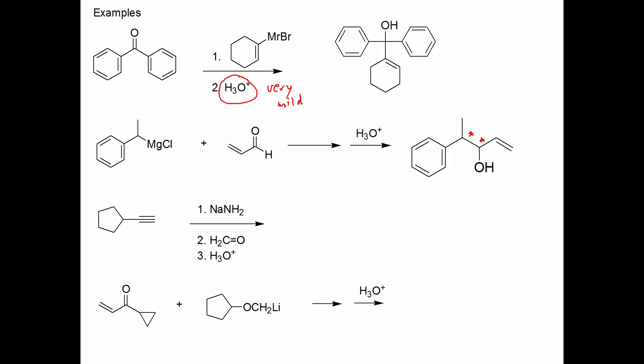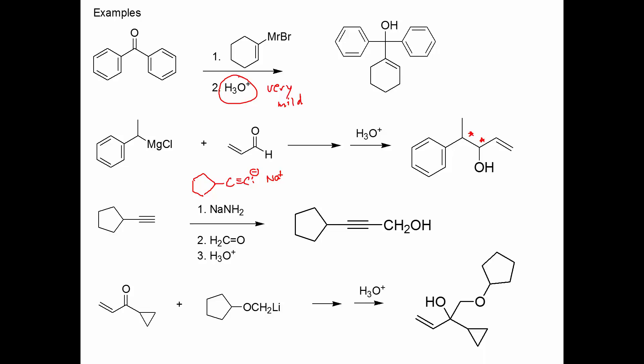This other one involves making an anion — a carbanion is like a Grignard reagent so it reacts the same way. Formaldehyde is our carbonyl compound, so when we add it, we get a primary alcohol, and there is our product. In the last one, we have an organolithium reagent that has an ether group in it. Everything to the left of lithium is going to end up in our product, and we're going to get that tertiary alcohol.